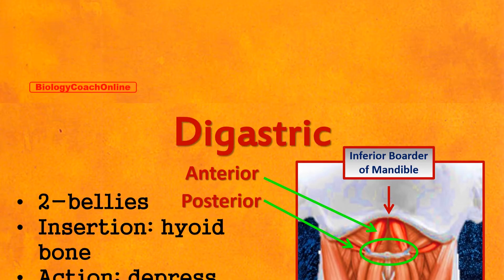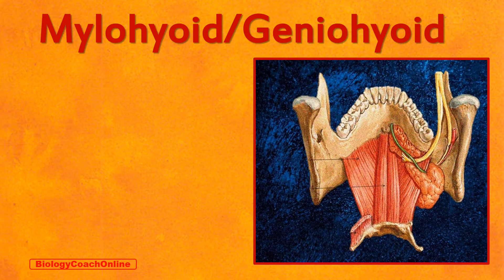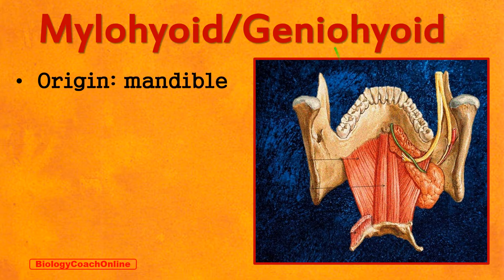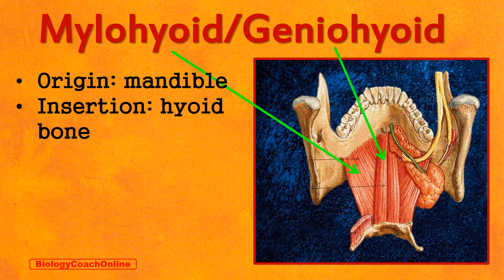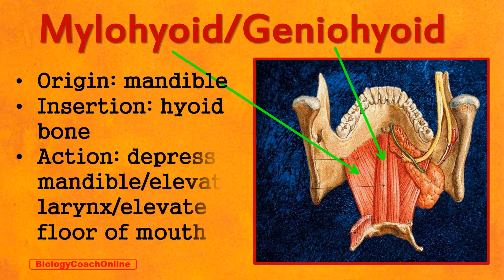Lying just under the digastric muscle is the mylohyoid muscle. The mylohyoid serves as the muscular floor of the mouth along with the geniohyoid muscle. The fibers of the mylohyoid run laterally, while those of the geniohyoid run longitudinally. Both muscles originate on the mandible, both insert on the hyoid bone, and collectively they depress the mandible, elevate the larynx, and elevate the floor of your mouth.